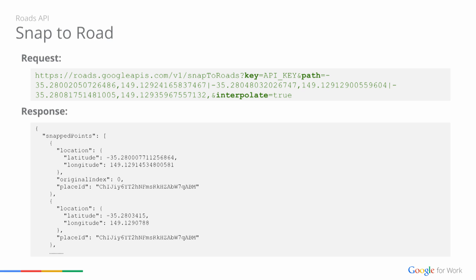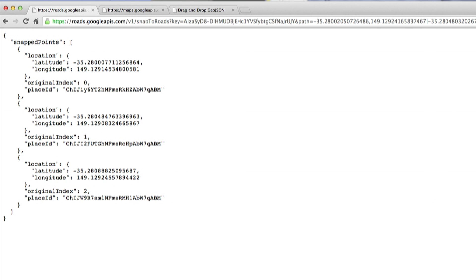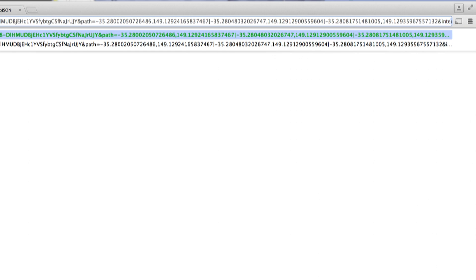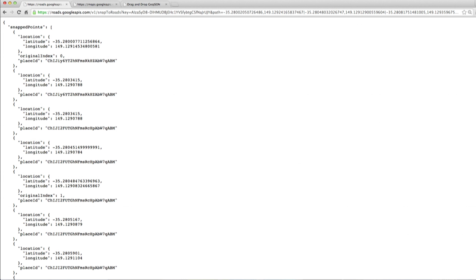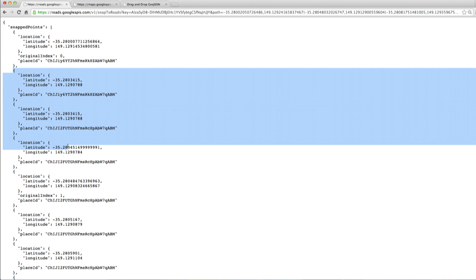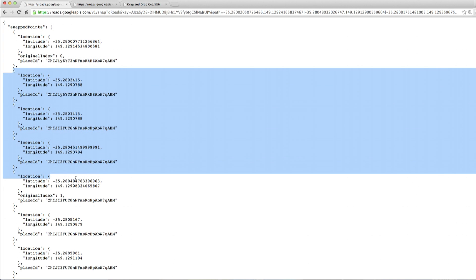Let me show you an example of what the Snap to Road request looks like. We use the Snap to Road endpoint. Just like Places API, Roads API is managed through Google Developers Console, where you can generate an API key. With the path parameter, you can specify the GPS coordinates from your asset, followed by the interpolate parameter. Without interpolate, we see three snap points for the three GPS coordinates we entered. When I add interpolate equals true at the end, you see additional points being added in between the three snap points, giving you a much smoother path.